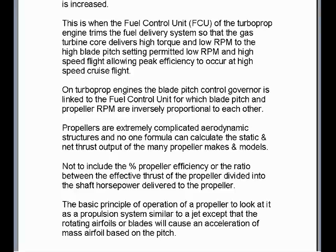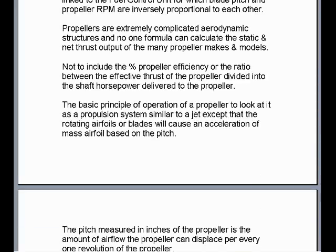On turboprop engines, the blade pitch control governor is linked to the fuel control unit, for which blade pitch and propeller RPM are inversely proportional to each other. Propellers are extremely complicated aerodynamic structures and no single formula can calculate the static and net thrust output across the many propeller makes and models, not including the percent propeller efficiency or ratio between the effective thrust of the propeller divided into the shaft horsepower delivered to the propeller.